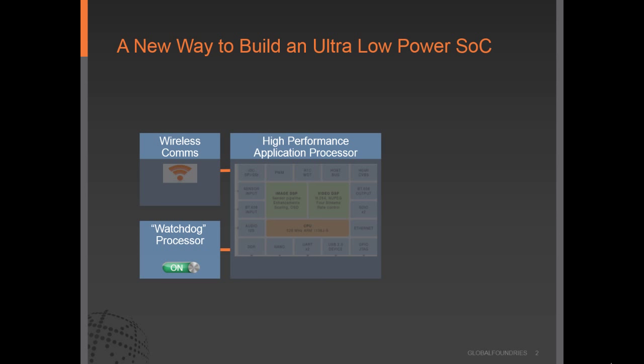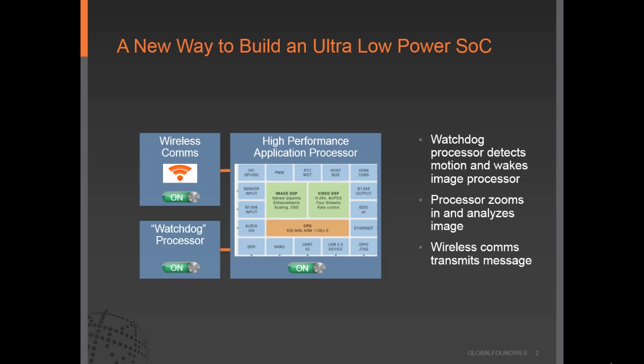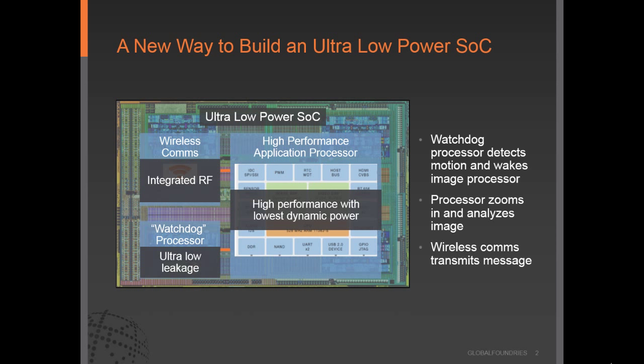Today we'll walk through a simple example of a low power SOC to talk about the unique capabilities of the 22nm FDX platform and how the technology provides new tools to optimize designs for ultra-low power. Such an SOC might consist of a watchdog processor that requires always-on operation with low activity factors or duty cycles, a high-performance application processor that needs to be optimized to minimize power consumption and extend battery life while in active mode, and to meet the demanding cost requirements of future chip sets, particularly for IoT markets, the application will require integrated RF such as Wi-Fi or Bluetooth LE.